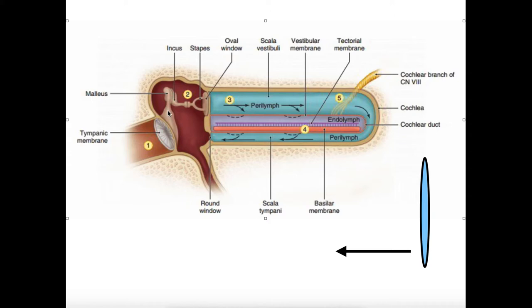Which then in turn vibrates the malleus, which then vibrates the incus, which then vibrates the stapes. Now recall that the stapes is in front of this structure called the oval window, which basically leads into this tube system right here.